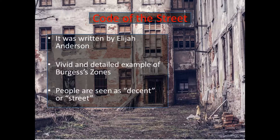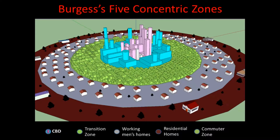The Code of the Street was written by Elijah Anderson. It has a very vivid and detailed example of Burgess's zones. The book talks about Germantown Avenue, which crosses through all these zones — it's about an eight-mile-long avenue — and how you can start seeing the different zones manifest as you move inward.